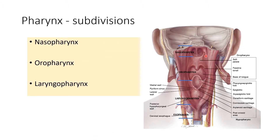Let us recollect the boundaries for each subdivision of the pharynx. The nasopharynx extends from the base of the skull to the soft palate. The oropharynx extends from the soft palate to the upper border of the epiglottis. The laryngopharynx extends from the epiglottis to the lower border of the cricoid cartilage, where it becomes continuous with the esophagus.